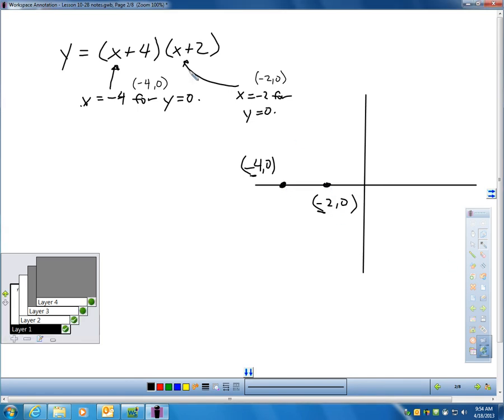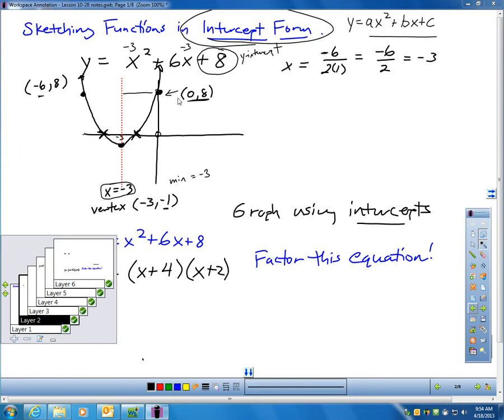You might ask, why didn't I get those two points? If this is the exact same problem as before, just a different form, why didn't I get the same two points? Actually, you did. You just didn't label them. There's negative 2, 0, and negative 4, 0. You can see them there.